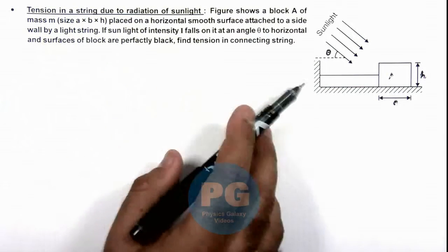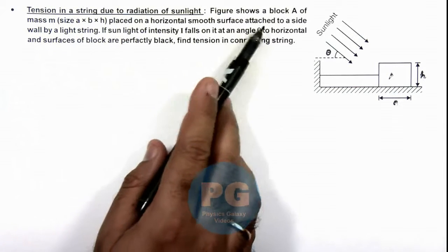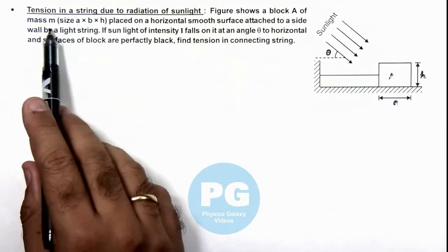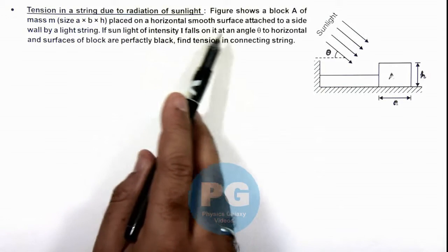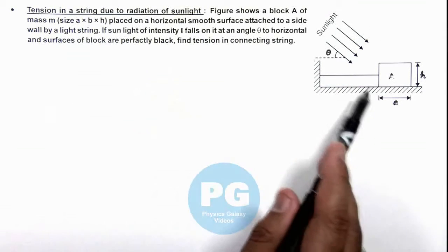Here the figure shows a block A of mass m, which is of size a×b×h, placed on a horizontal smooth surface attached to a side wall by a light string.